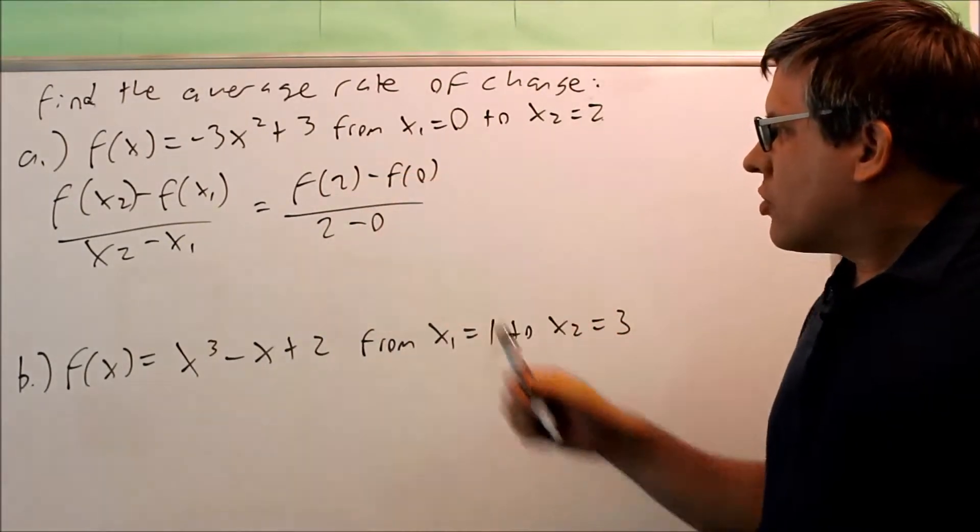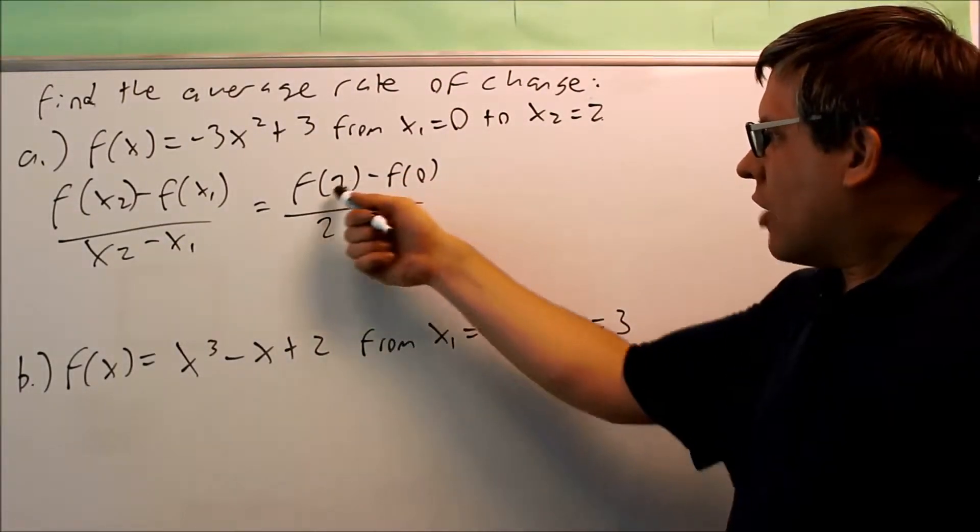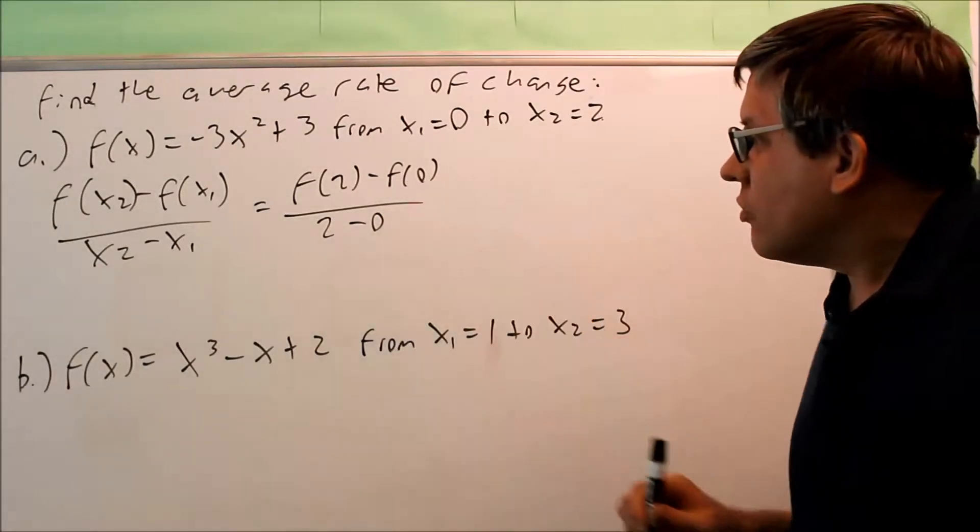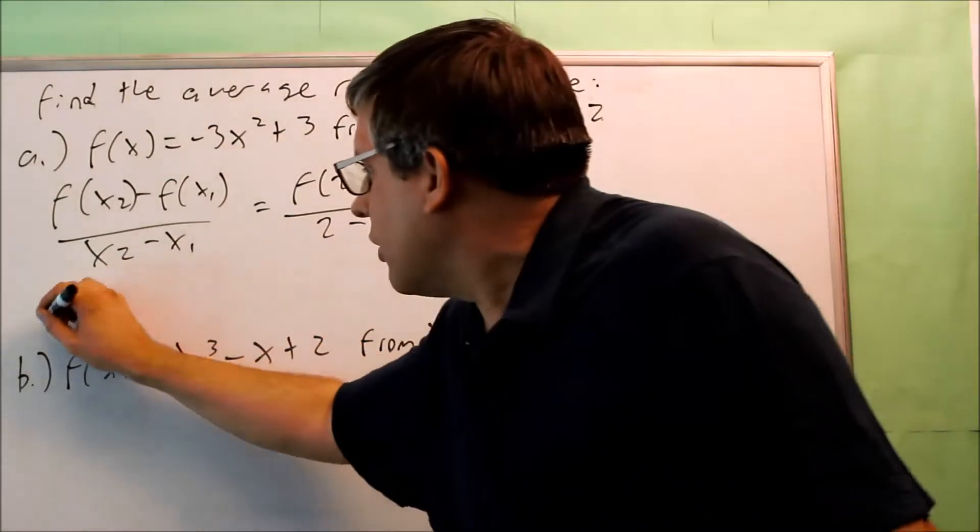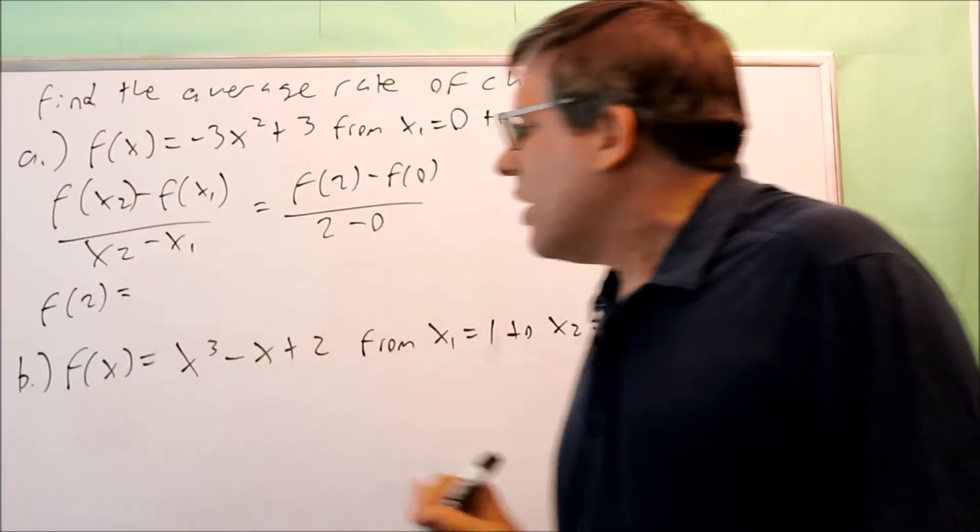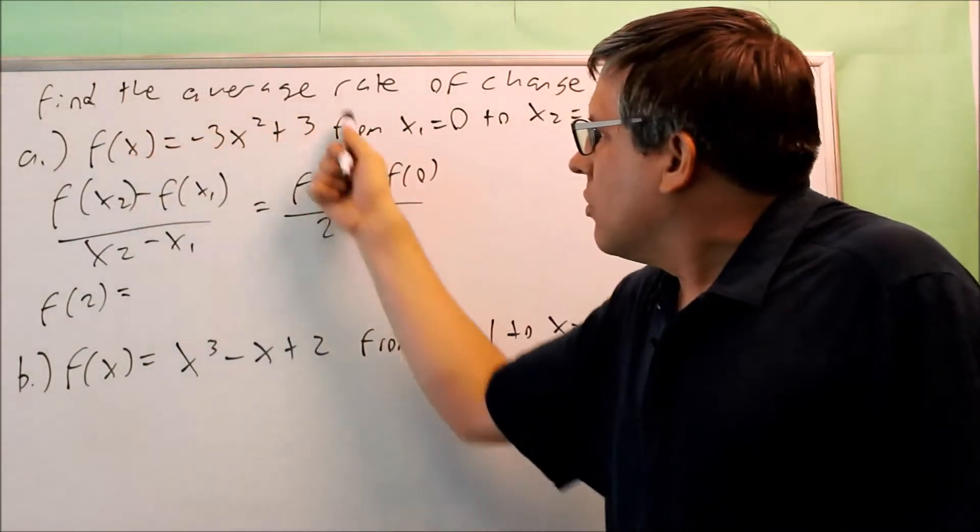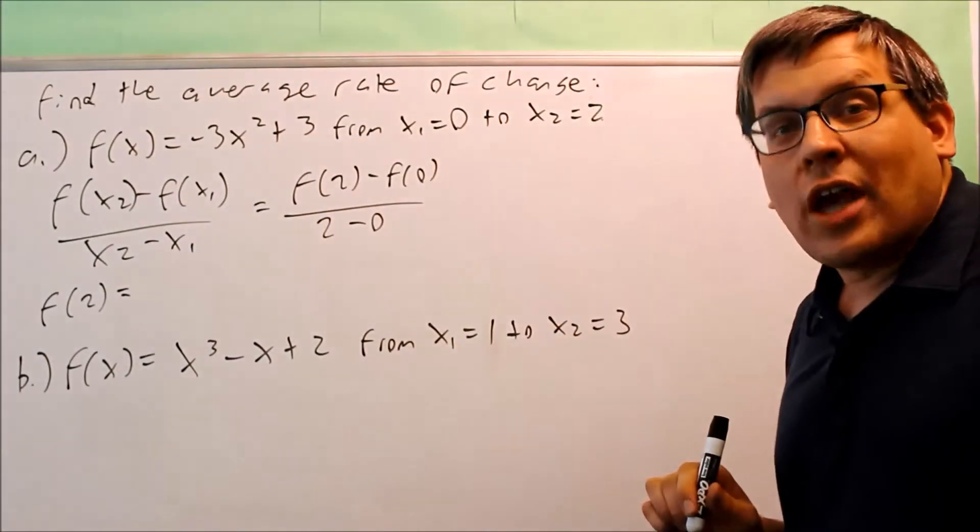Well we don't know enough information to finish this yet. We don't know f of 2, we don't know f of 0 either. So we have to find f of 2 and f of 0 separately. Let's do that down here. We want to find f of 2.